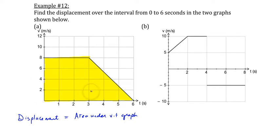And you're welcome to find that area whatever way you wish to do it. I'm just going to break this up into a rectangle and a triangle. My rectangle has a height of 8 meters per second and a width of 3 seconds. And my triangle is half of that area. And that gets you an answer of 36 meters.